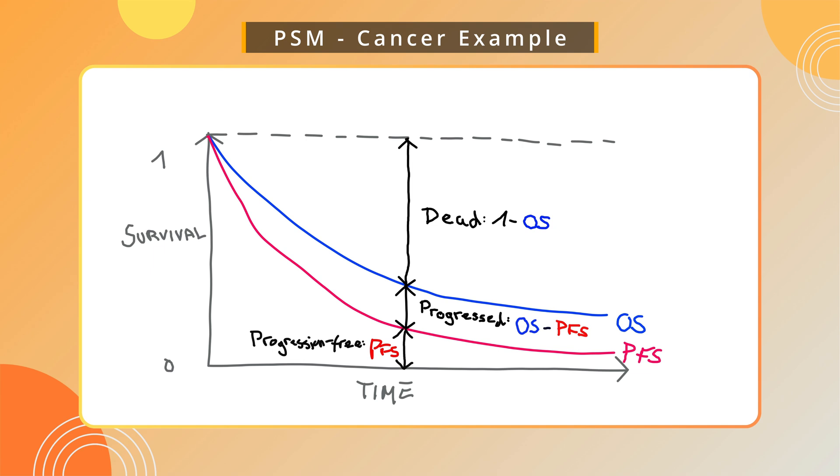Similarly, we can subtract the PFS from the OS curve to quantify the proportion of patients in the progressed health state. Lastly, we know how many patients are progression-free through our PFS curve. This is why a PSM allows you to easily visually compare the effectiveness of two treatments by directly plotting the survival curves and using the area under the curve to gauge total survival and progression-free time. This provides a clear visual representation of which treatment performs better.